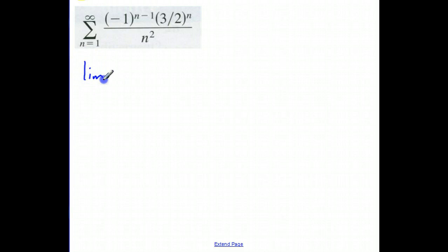I'm going to take the limit as n approaches infinity of the absolute value. And this is important to remember, I'm doing the absolute value, so that negative 1 to the n minus 1 doesn't matter anymore because the absolute value is all we're worried about, which is going to make everything positive. So that's going to be 3 halves to the n plus 1 over n plus 1 squared, that's my a sub n plus 1 term, times I'm going to multiply it by the reciprocal of the a sub n. So that's going to be times n squared over 3 halves to the n.